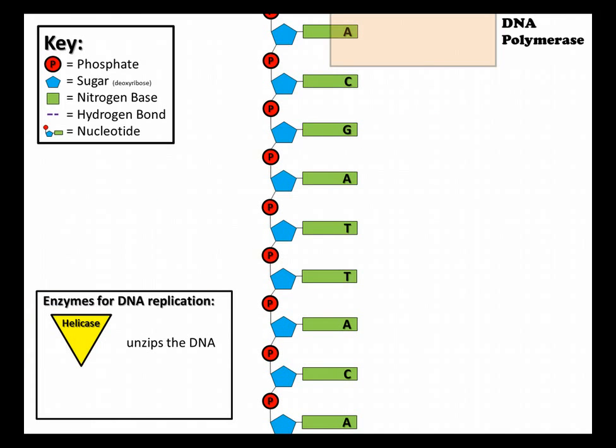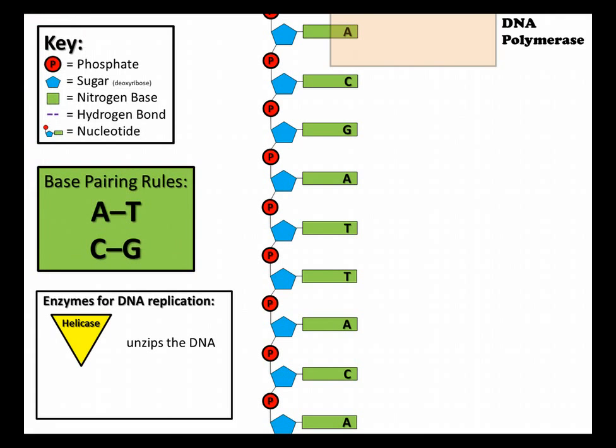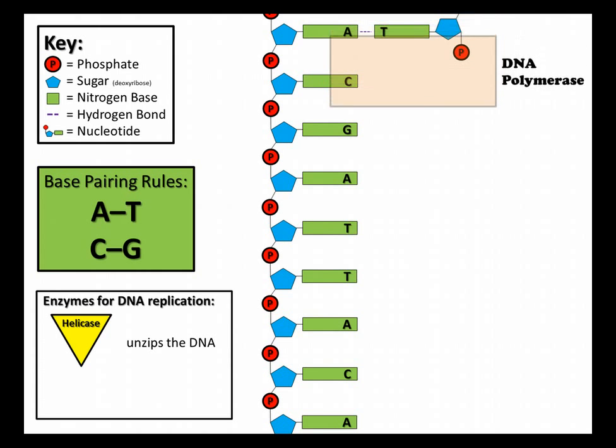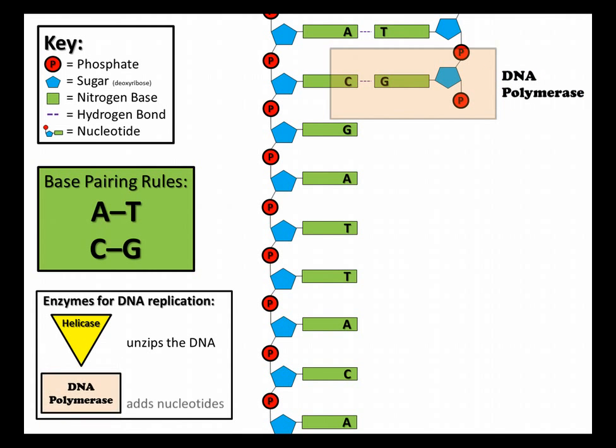Now, we have another enzyme come in called DNA polymerase. Again, it's an enzyme. It ends A-S-E. DNA polymerase is going to come in, and it's the one that actually does those base pairing rules. A with T, C with G. So, in the case right here, I have A. That is going to pair opposite T. DNA polymerase is going to move on down to the next one. It's got a C, so it's going to pair with a G.